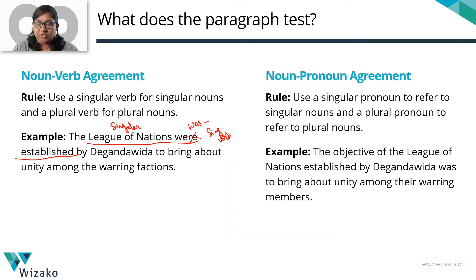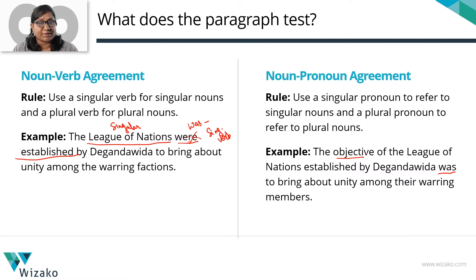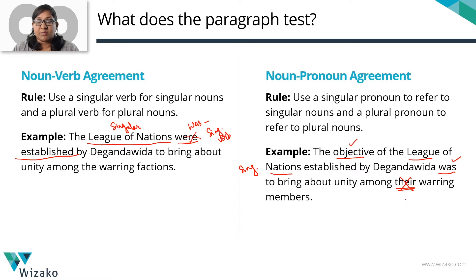Let's look at an example: 'The objective of the League of Nations established by Deganavida was to bring about unity among their warring members.' We're talking about the objective — a goal, singular — that is why we use 'was.' Here 'was' agrees with 'objective,' not with 'League of Nations.' So that is noun-verb agreement: both are singular. Now, whose warring members? Members of the League of Nations. As we discussed, League of Nations is a singular noun, so you must use a singular pronoun. Using 'their' here is incorrect because 'their' is plural. You should say 'its warring members' — one organization and its members. This is a noun-pronoun agreement error.